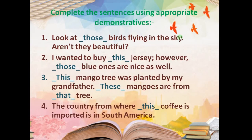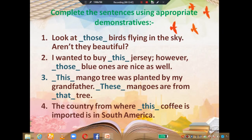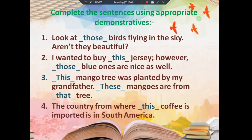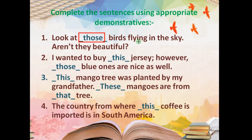Now this is classwork: the demonstrative exercise. 'Look at those birds flying in the sky — aren't they beautiful?' The birds are in the sky, so they are not nearby us — that is why we use 'those.' And 'birds' is plural — that is another reason for using 'those' instead of 'that.'